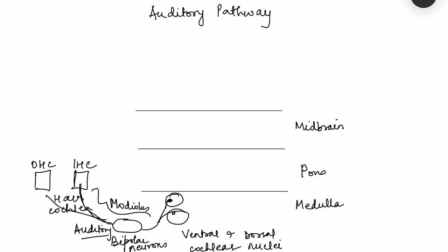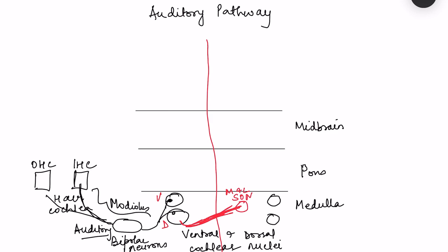From the ventral and dorsal cochlear nuclei there is diversion of the pathways and the auditory pathway goes in four directions. Most of the pathways go and synapse on the superior olivary nuclei present in the medulla — there is a medial and lateral superior olivary nucleus. Most fibers cross to synapse on the contralateral superior olivary nuclei, and some fibers also go to the ipsilateral superior olivary nuclei.